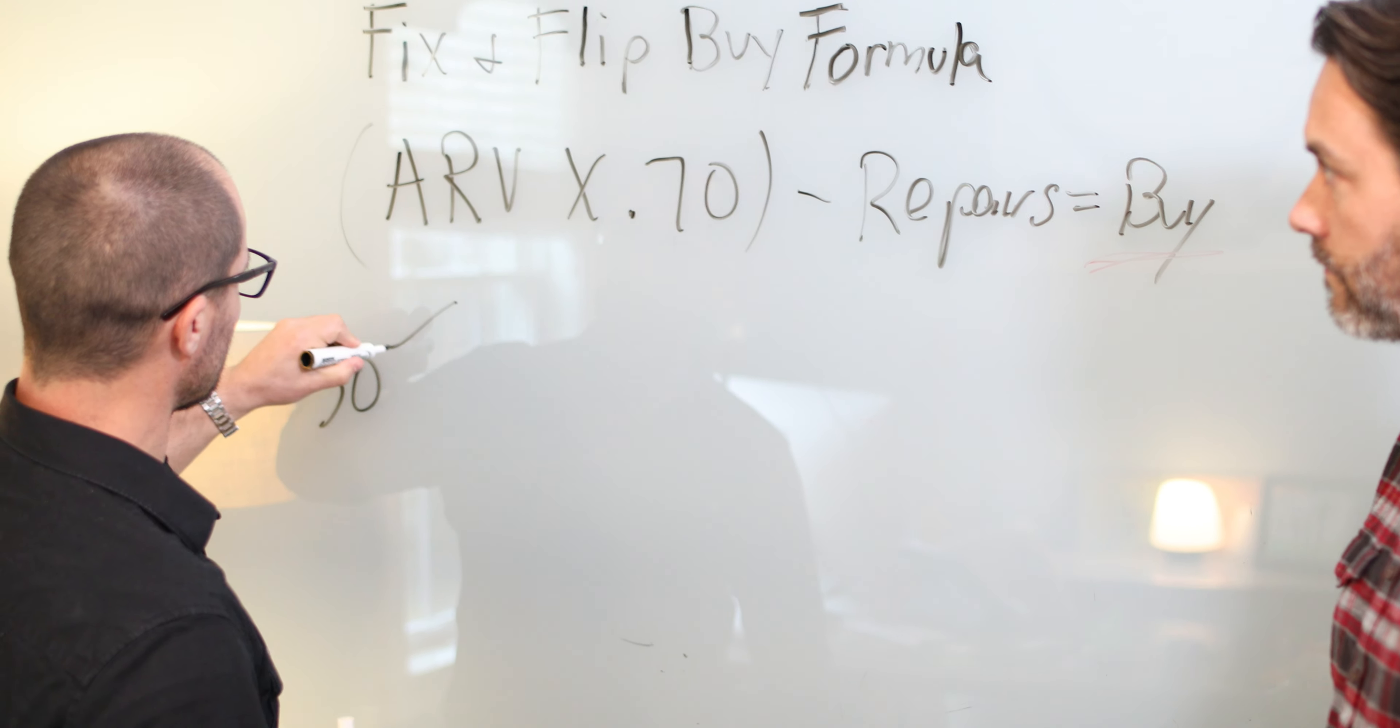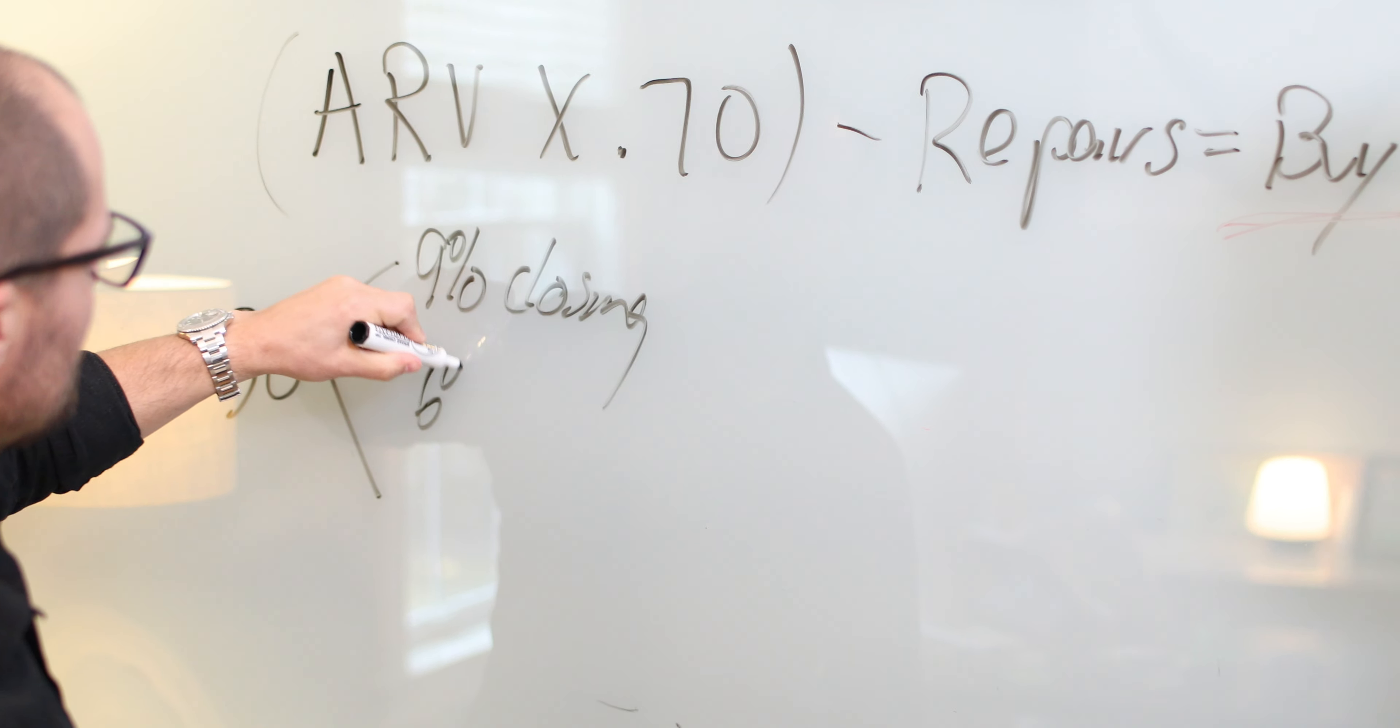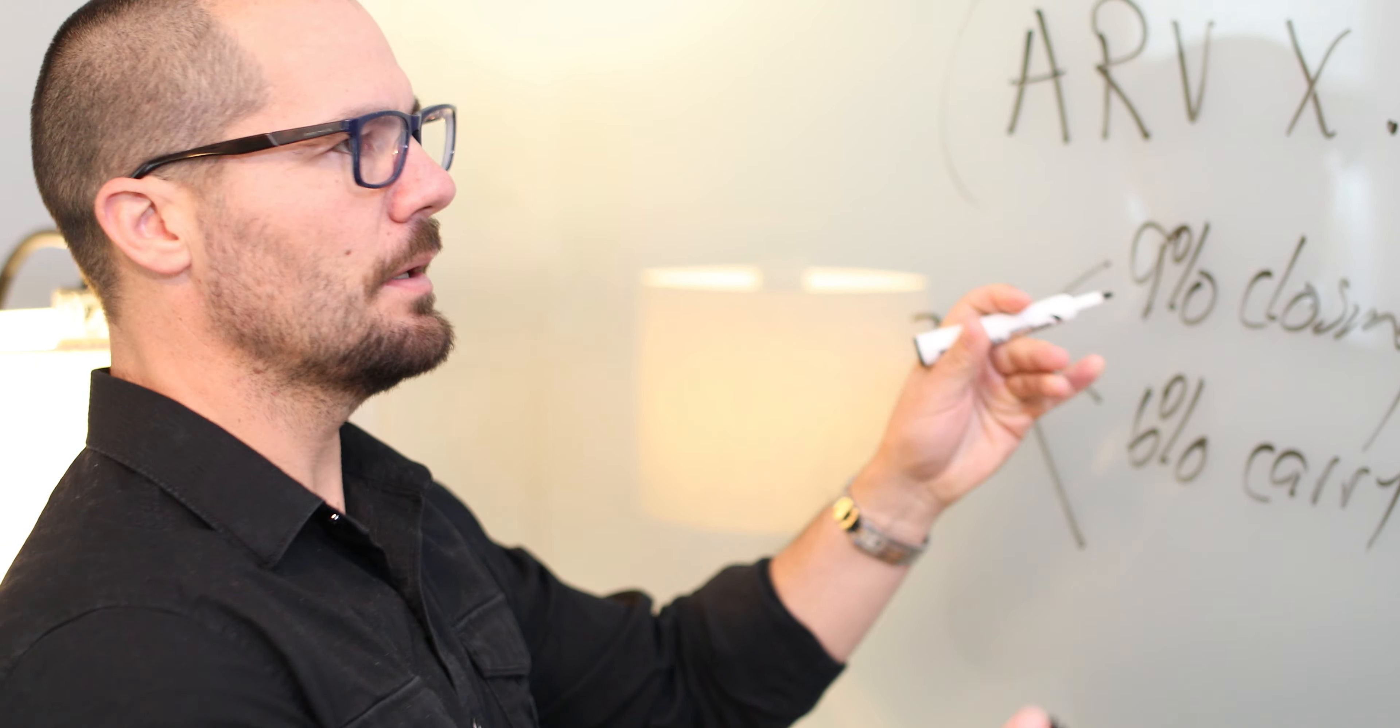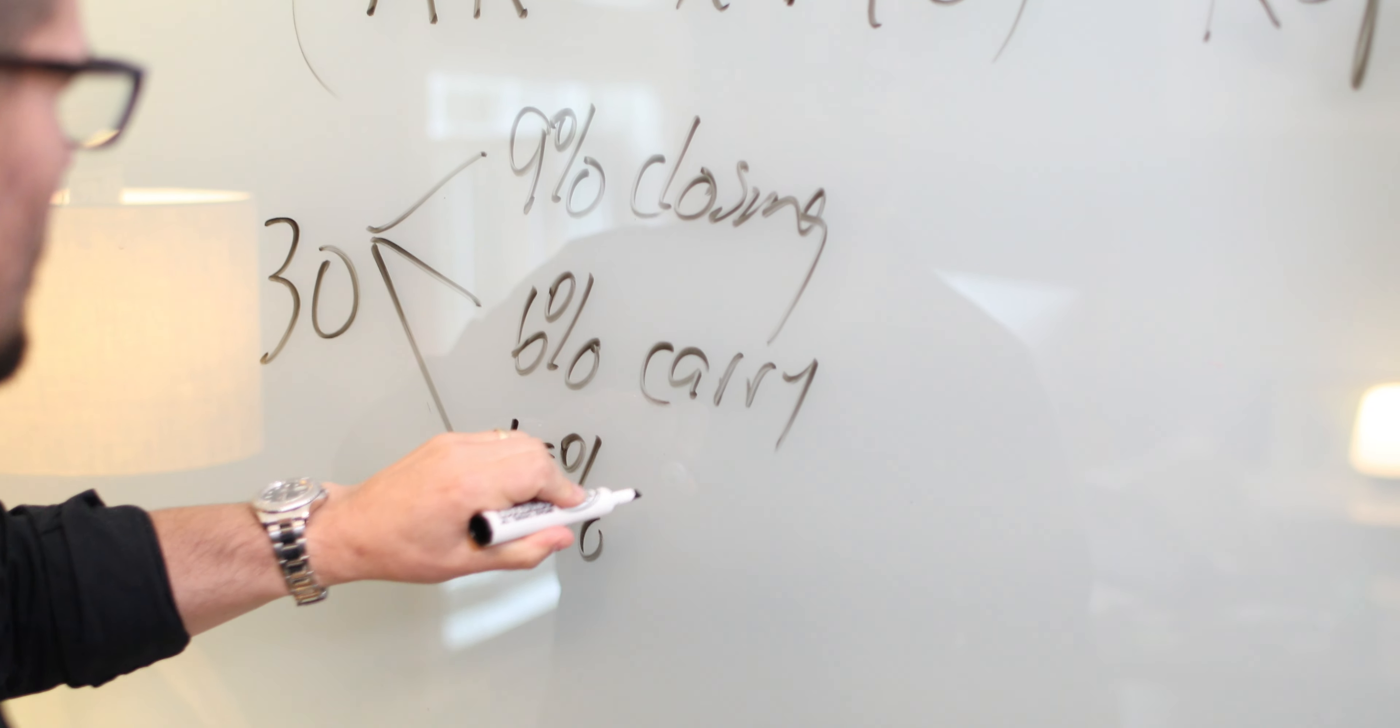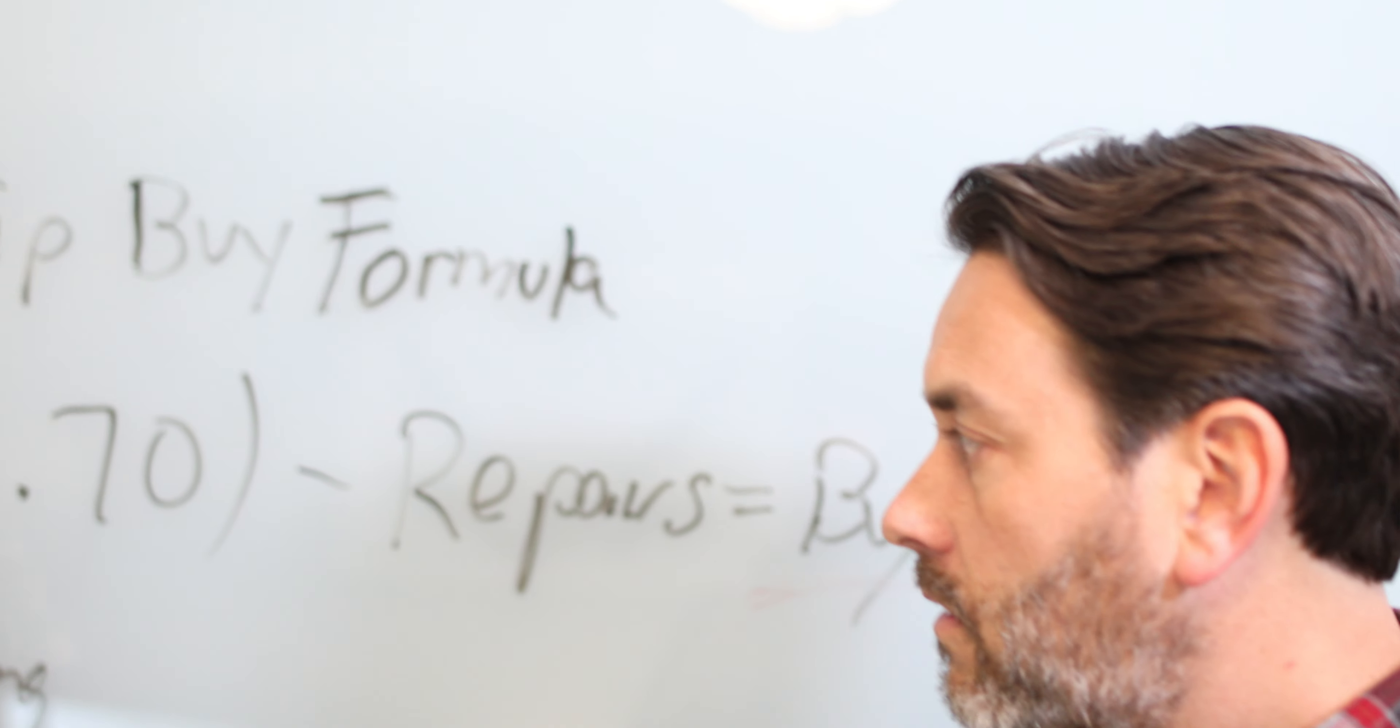So that 30% goes to three things, right? It goes about 9% to closing. It goes 6% to carry, we call it, which is your cost of money, your carrying costs. Again, you have to buy the property, pay for the repairs. So you have money, you borrow that money, if you do it right, you borrow that money, 6%. And then your profit, which is the big number we're talking about today, is that 15%. So you're always gunning for a 15% profit. Most fix and flippers are looking for about that.